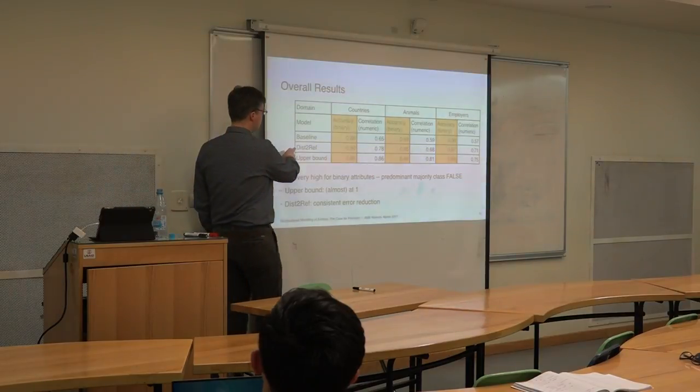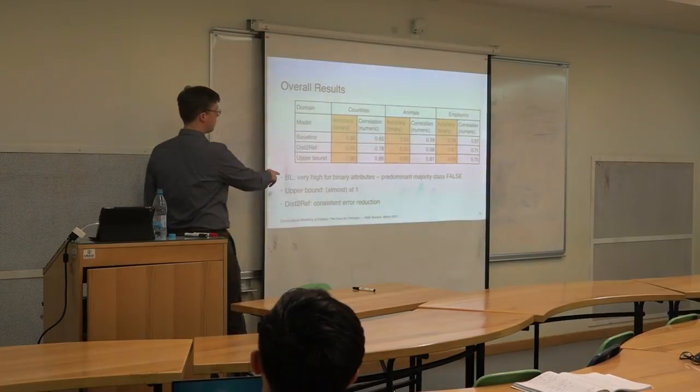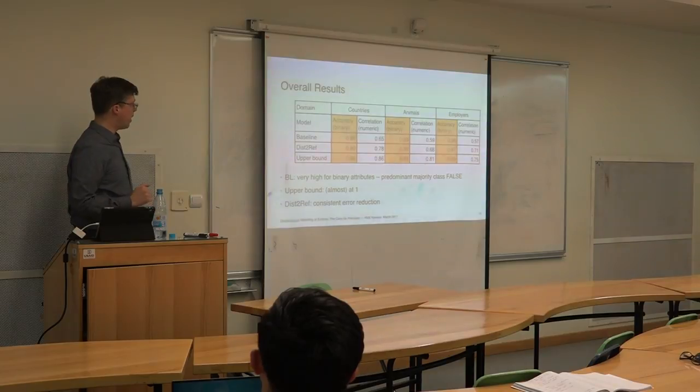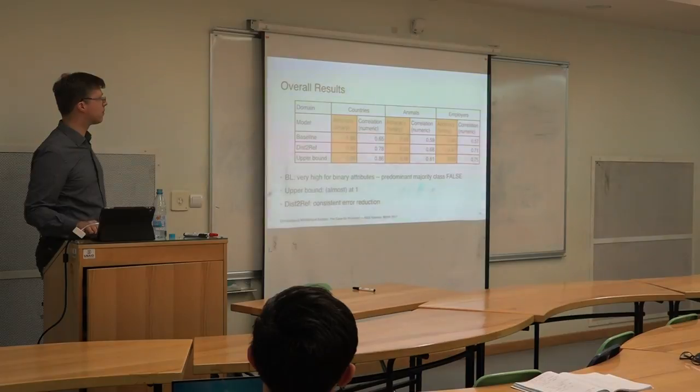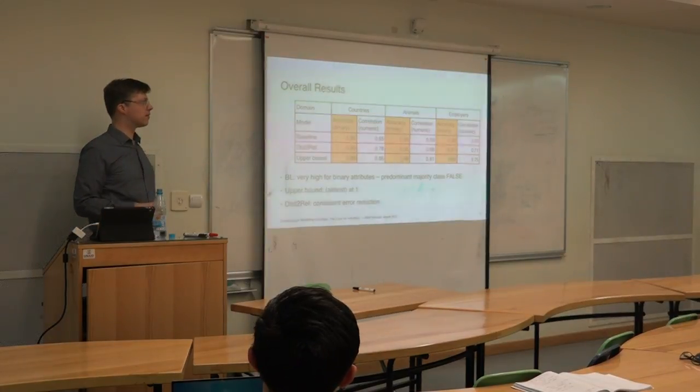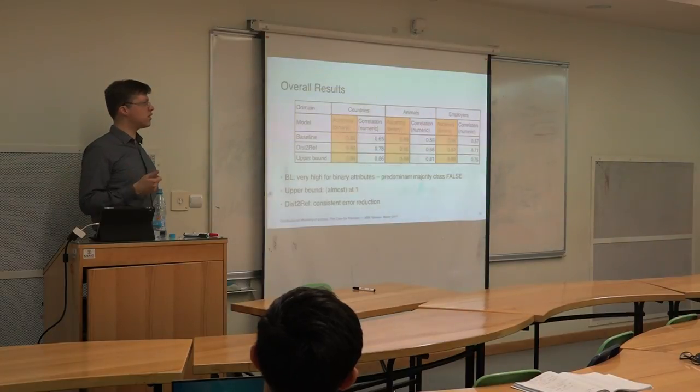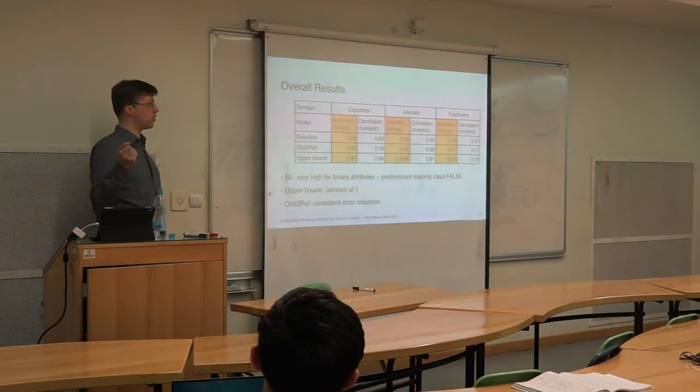Then our own model here improves over the baseline, of course. It doesn't quite reach the upper bound, which is here at almost one. You say binary, what do you mean here? Binary, it's like a zero-one accuracy binary. Why do you call it binary? I mean, we're doing logistic regression.